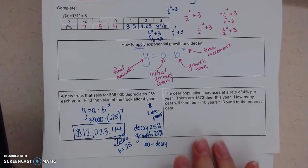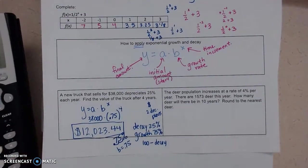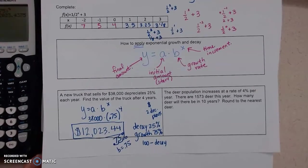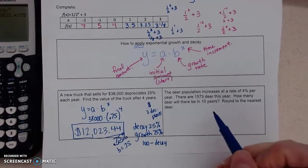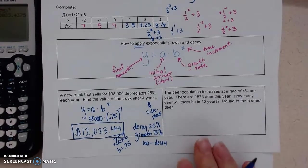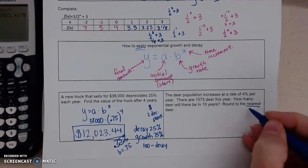All right, let's talk about deer. So the deer population increases at a rate of 4% per year. There are 1573 deer this year. How many deer will there be in 10 years? Round to the nearest deer. So we don't want half deers.